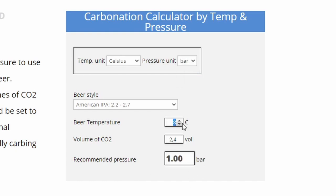If I had it very cold in my fridge, let's say 4°C and I still want 2.4 volumes, that would mean that I would set my regulator to 0.7 bar or 10.11 PSI.